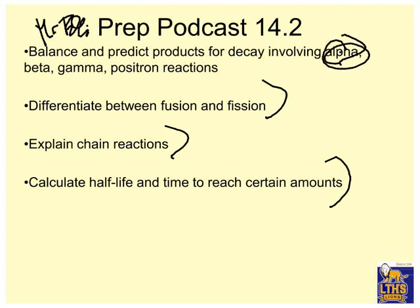We have a few little objectives to get through here. Balance and predict products involving alpha, beta, gamma, and positron reactions. These are nuclear reactions. Differentiate between fusion and fission. Explain chain reactions. And calculate half-life and the time to reach certain amounts. So let's go ahead and get started.